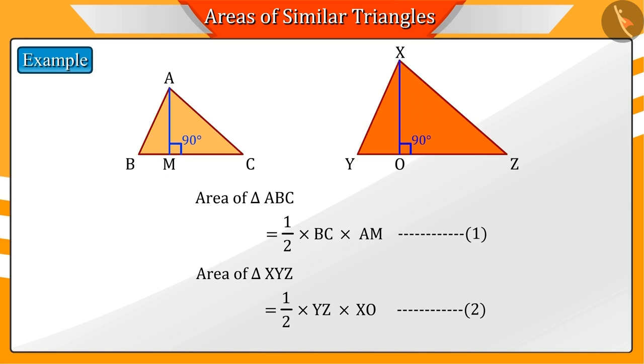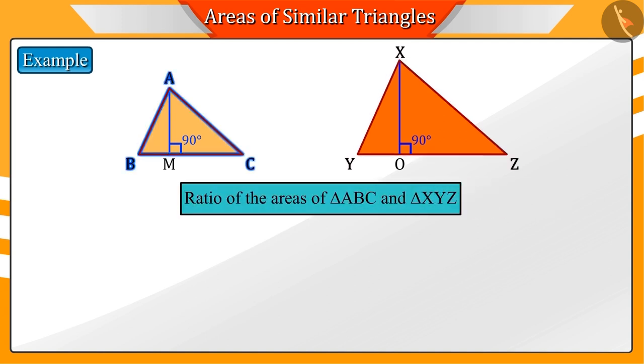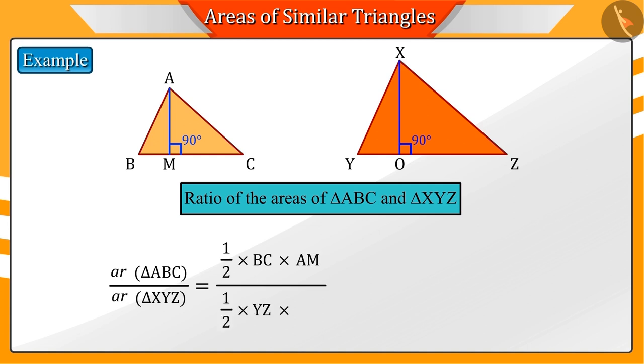Since we have to find the relation between the ratio of the corresponding sides and the area of the triangles, we find the ratio between the areas of triangle ABC and triangle XYZ, which is represented by equation 3.